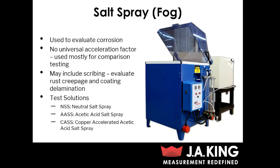Our next type of testing is salt spray or salt fog testing. This is a type of corrosion testing used to evaluate the corrosive properties of the part itself or the coating. One thing to keep in mind with salt spray: while it is the most common type of corrosion testing, there are some downsides — unfortunately there's no universal acceleration factor. This is mainly due to the fact that the acceleration factor is dependent on so many different variables: the material itself, the coating that's used, and the actual product use location.